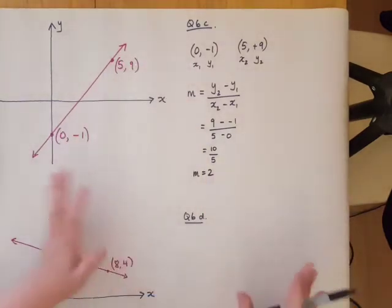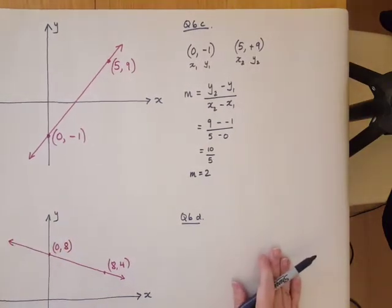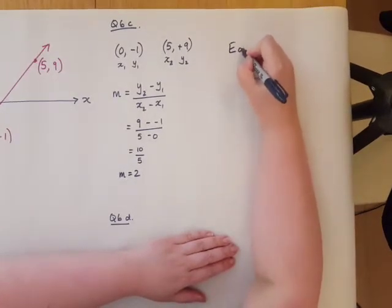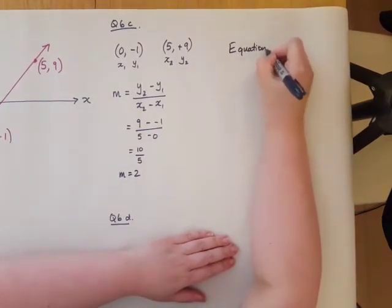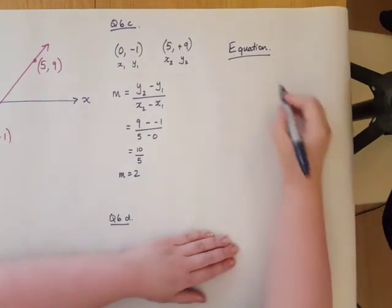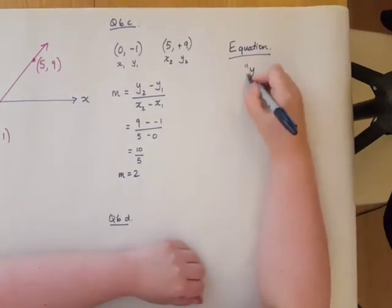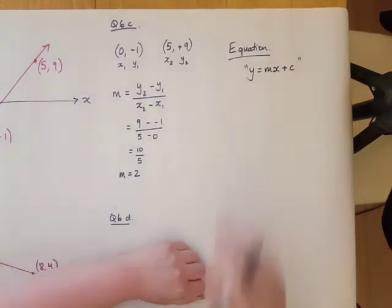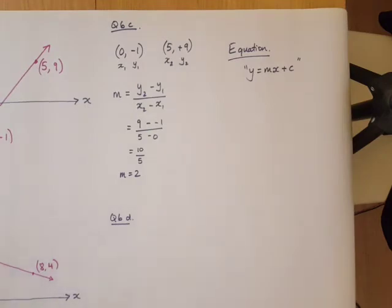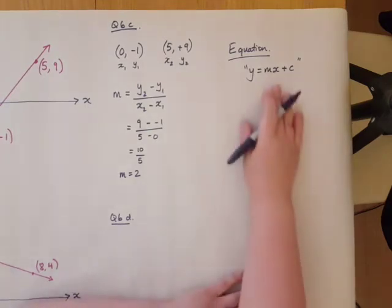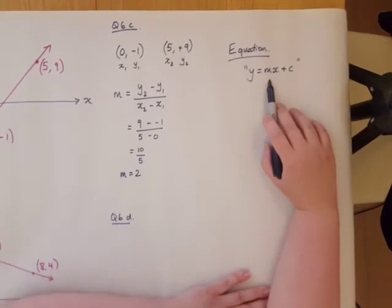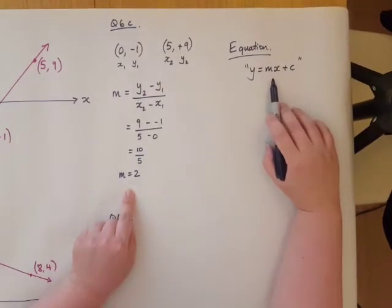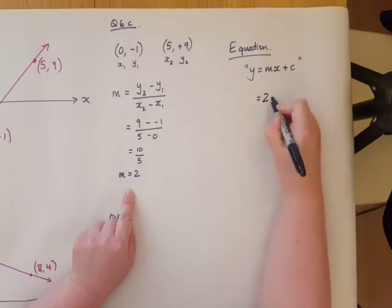So this gradient is 2, we know that. Now to get to the equation, we said in the previous lesson that the equation is always going to have this format: y equals mx plus c. You'll see different formats later on in year 9 and year 10, but for the moment we're only using this one. And we said m was the gradient, so we know what m is. Here it is, m equals 2, so I write 2x.